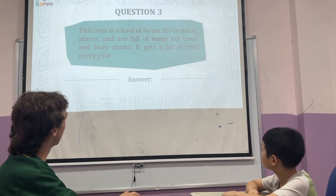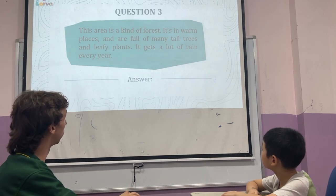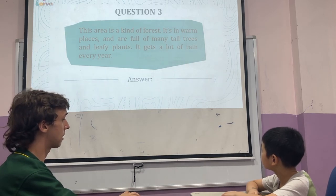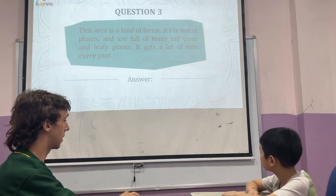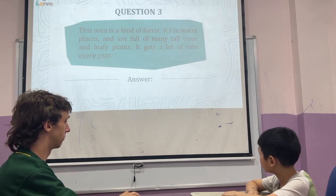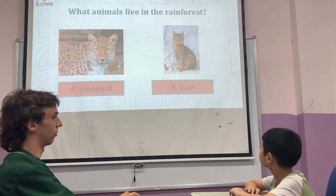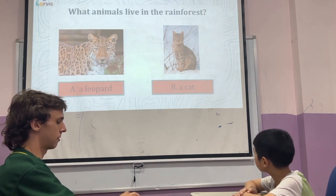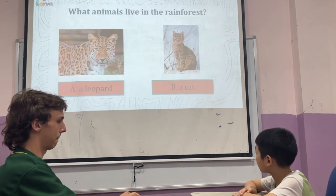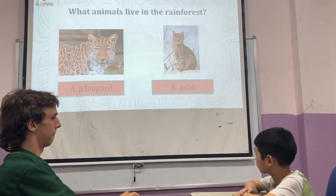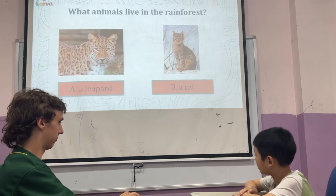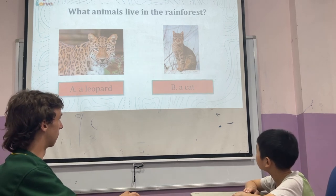Number three. This area is a kind of forest. It's in warm places with many tall trees and lots of rain. And what animal lives in the rainforest? A leopard. A leopard. Nice, very good.